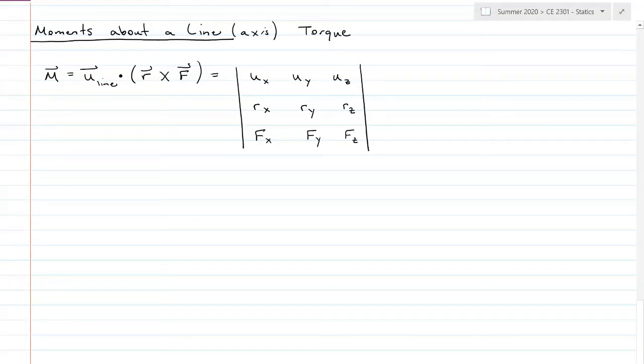And we've got a dot product involved, which means this is not a vector, this is a magnitude, and if we want it in vector format, we would have to multiply it by the line vector again. So that's going to be that moment times the unit vector of the line to get it in Cartesian format.